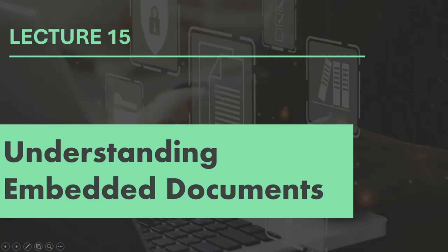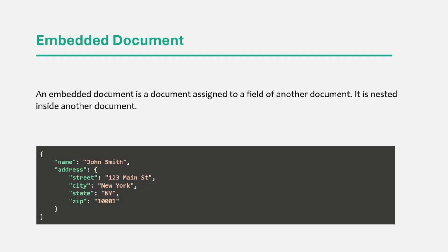In one of the previous lectures, we learned about the different data types which MongoDB supports, and we learned that to a field of a document, we can also assign another document, and that document is called a nested or embedded document. An embedded document is a document assigned to a field of another document — it is nested inside another document. In this lecture, let's learn in detail what a nested or embedded document is and how we can work with it.